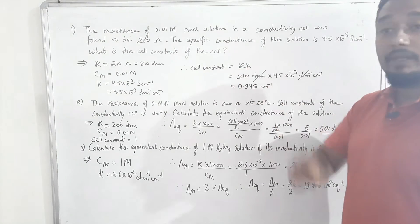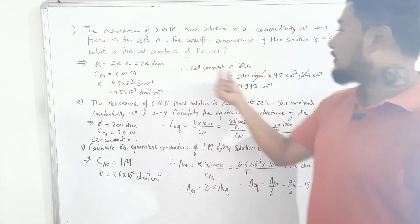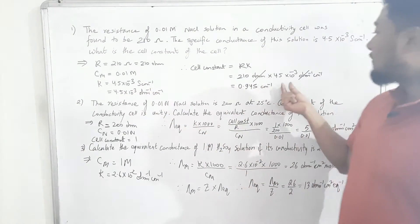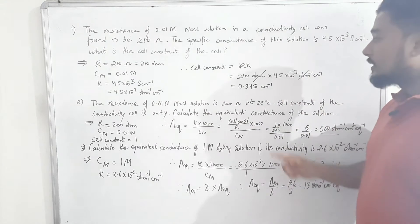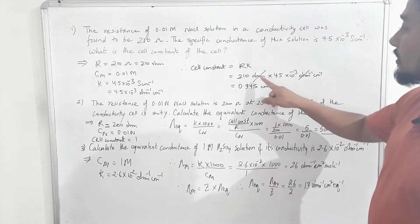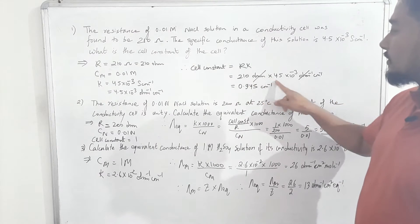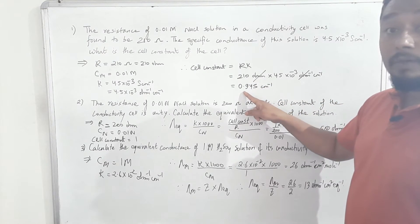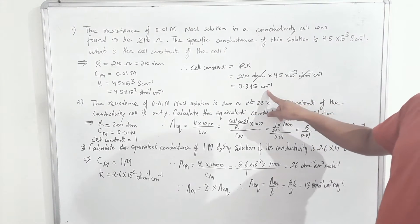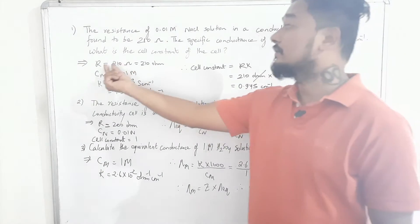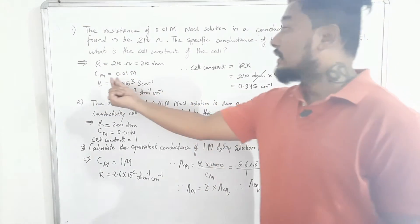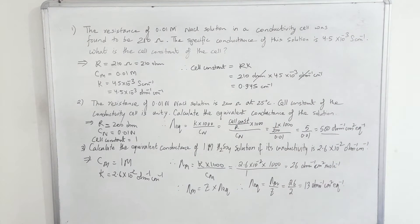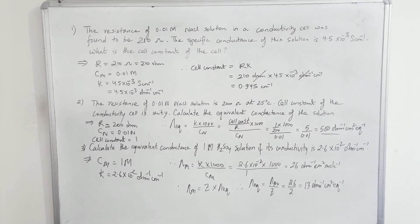Cell constant = R × κ. Resistance is 210 Ω and κ is 4.5×10⁻³ Ω⁻¹ cm⁻¹. The ohm and ohm-inverse cancel, leaving the numbers: 210 × 4.5×10⁻³ = 0.945 cm⁻¹. Note that concentration CM had no role here — whatever is given in the question doesn't always need to be used when solving the numerical problem.